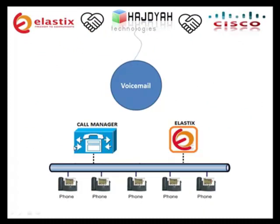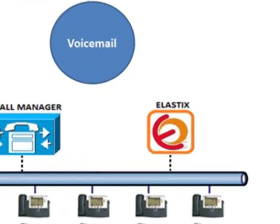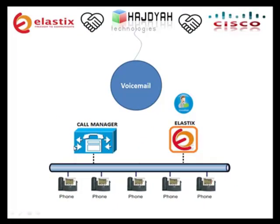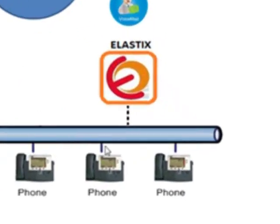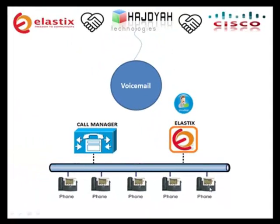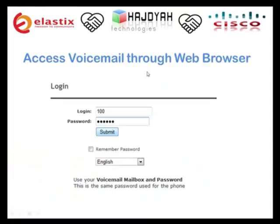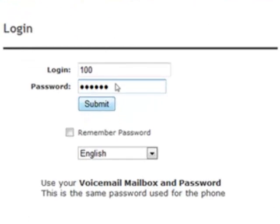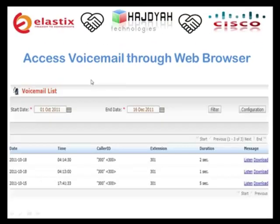To use voicemail with Cisco Call Manager, you need a Unity Express device. But after integrating Cisco Call Manager with Elastisk, Elastisk will work as the voicemail system for Cisco Call Manager. Elastisk gives you more features in voicemail. The end user can access voicemail in three ways: through a web browser, where each user gets a username and password.